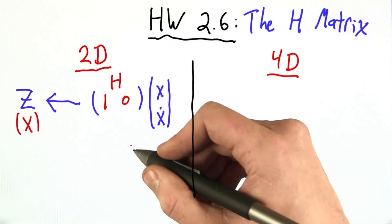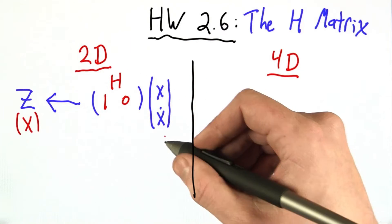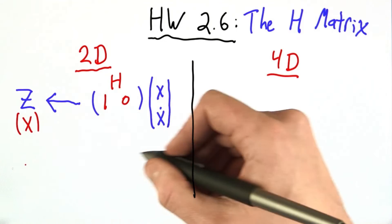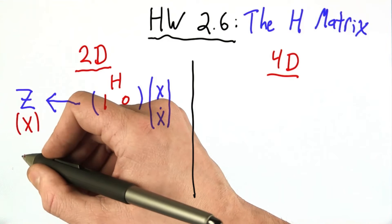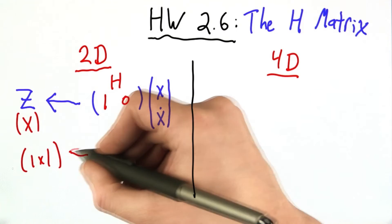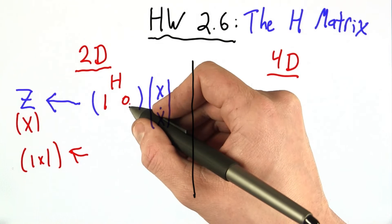But now, let's talk about the dimensionality of these matrices and how this multiplication yielded just this number x. So, x here we can think of as a 1 by 1 matrix.